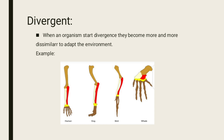Now we will discuss divergent. As the name indicates, divergent means to divert from their original path. When an organism starts divergence, they become more and more dissimilar to adapt to the environment.